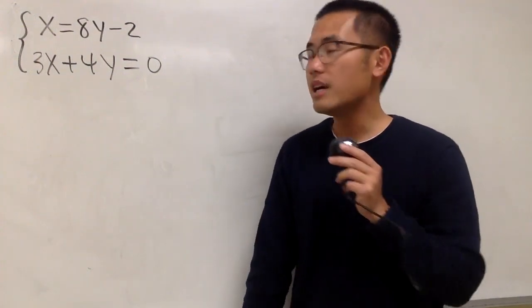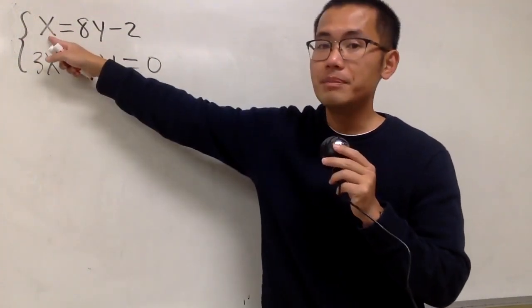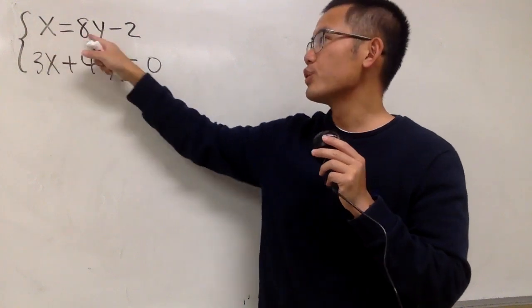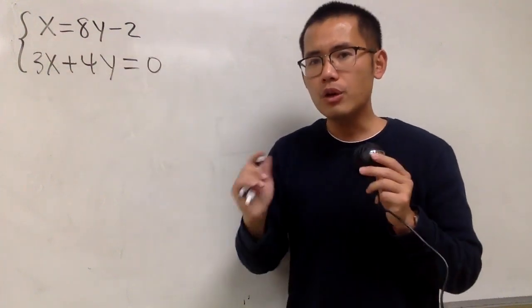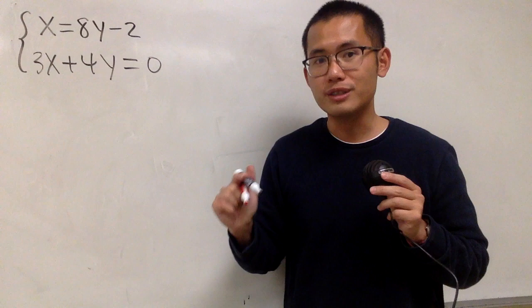Okay, we are going to solve this system of equations. Notice that we have the x being isolated already. x is equal to 8y minus 2. So, I think it's a good idea to just do substitution.